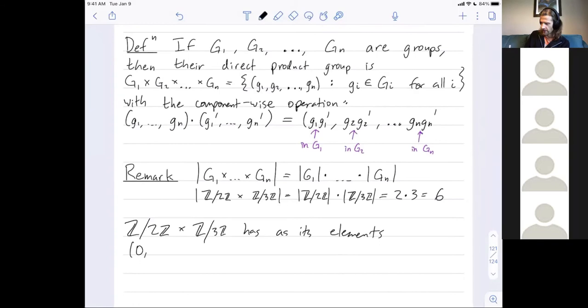I could have (0,0), (0,1), or (0,2). So far I've put 0 with all of the three elements of Z mod 3Z, and then I could also pair 1 with all of those elements.